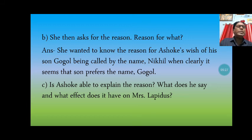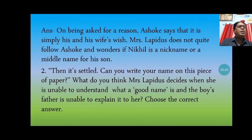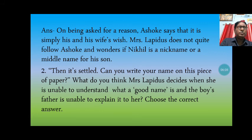Is Ashok able to explain the reason? What does he say, and what effect does it have on Mrs. Lapidus? On being asked for the reason, Ashok says that it is simply his and his wife's wish — not any special or specific reason. Mrs. Lapidus does not quite follow Ashok and wonders if Nikhil is a nickname or a middle name for his son. She asked this question, and then it is settled.